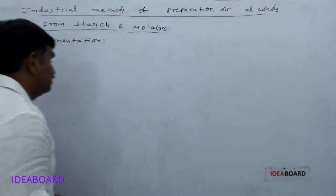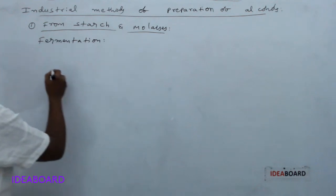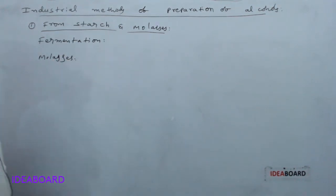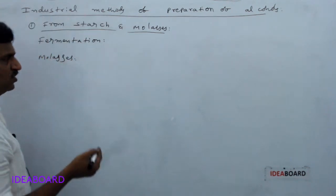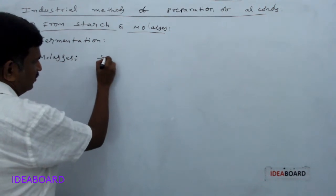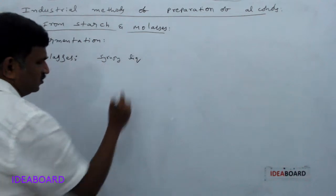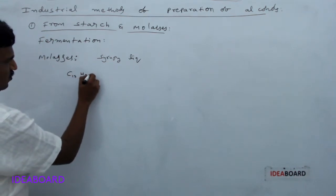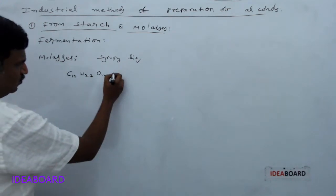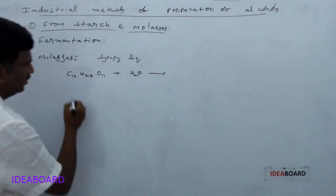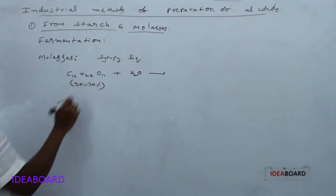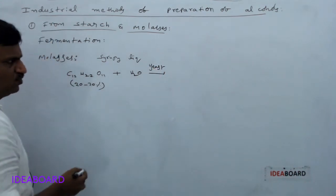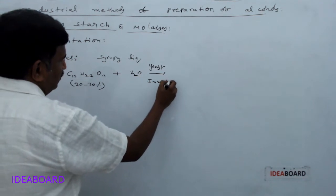In the fermentation process, we first take molasses. Molasses is a syrupy liquid which is left after the crystallization of sugar from sugarcane juice. It is a syrupy liquid left over after crystallization of all possible sugar. This is generally C₁₂H₂₂O₁₁, which contains 20 to 30 percent sugar, so it is diluted first with water, and then yeast is added. Yeast contains two enzymes: invertase and zymase.